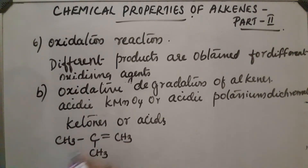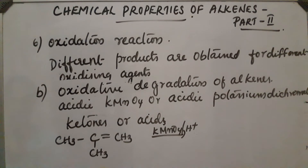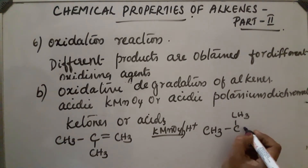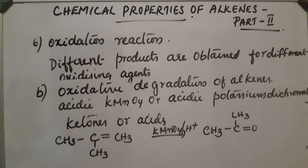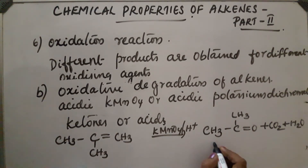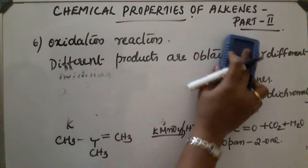Let us take one example: 2-methylpropene, CH₃–C=CH₂. On reaction with acidic potassium permanganate solution, the product obtained is a ketone: CH₃–CO–CH₃ (propan-2-one, also called propanone), plus CO₂ and H₂O. So propan-2-one is obtained.